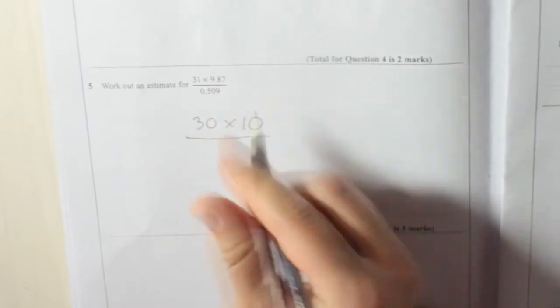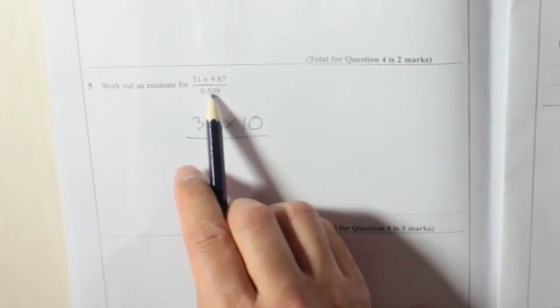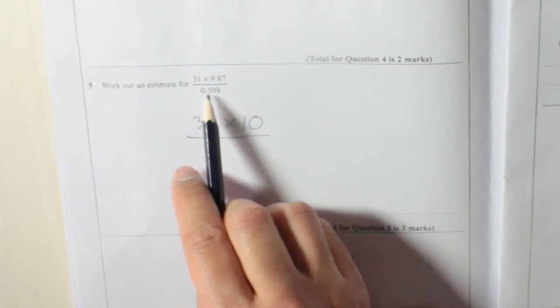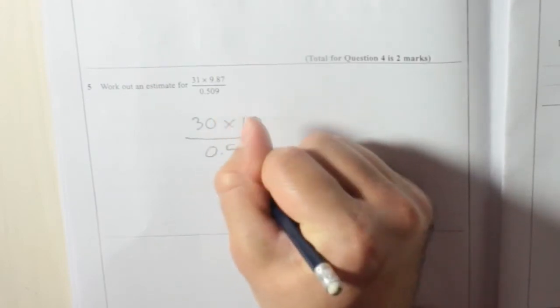Divided by 0.509, the first significant figure, remember it's always the first number that isn't 0, so it's the 5. That's one decimal place, so round it to one decimal place, and that is 0.5, which should be a lot easier to work out.